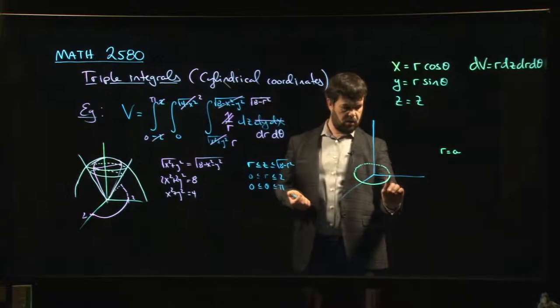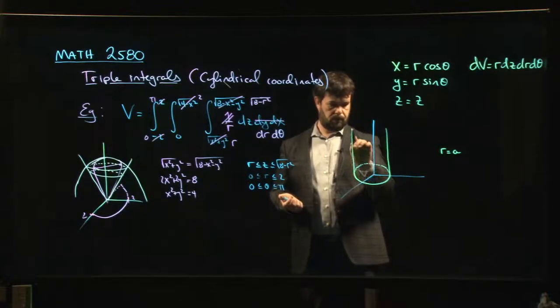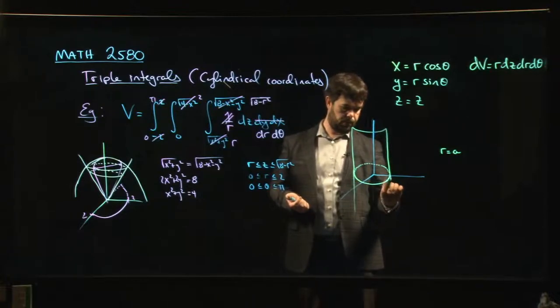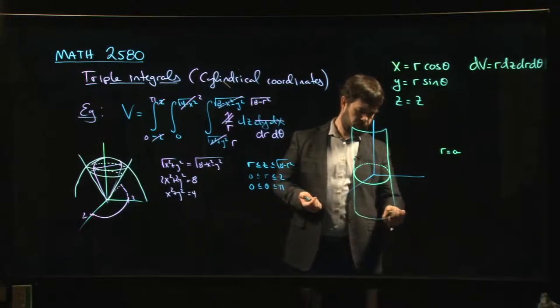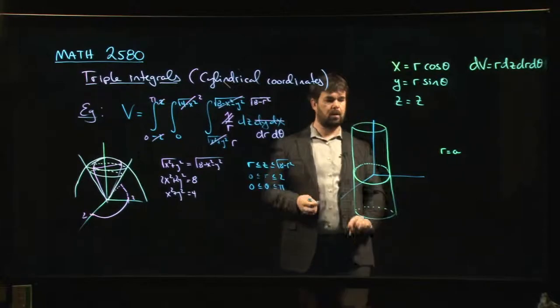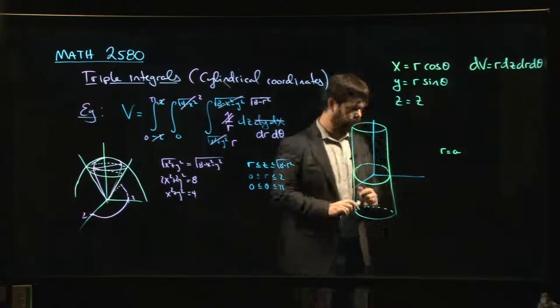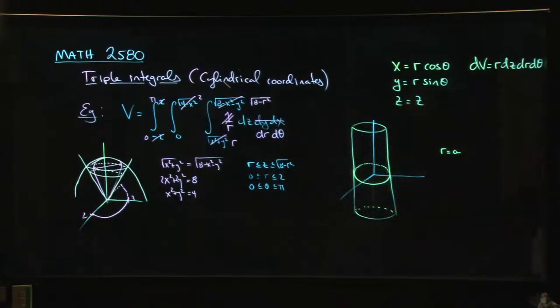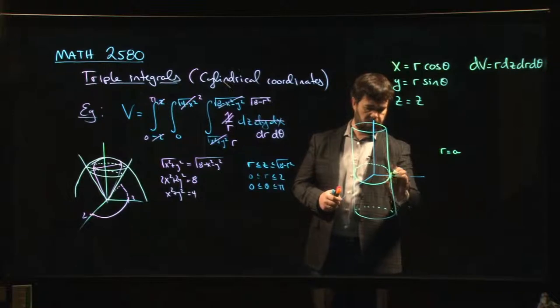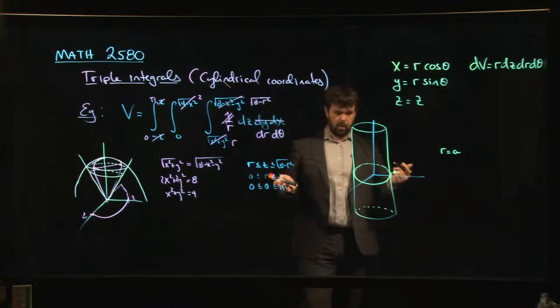So really when you say r equals a, you're saying that you could be anywhere on this cylinder. So specifying the r coordinate tells you where you are on the cylinder. So we've got a. Let's mark that in another color. So there's a. Okay, so now you know you're on this cylinder. Where do you go from here?